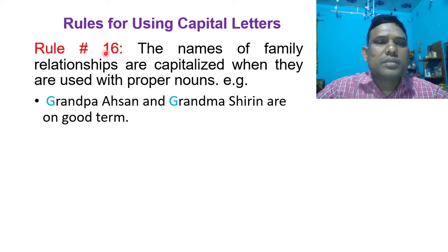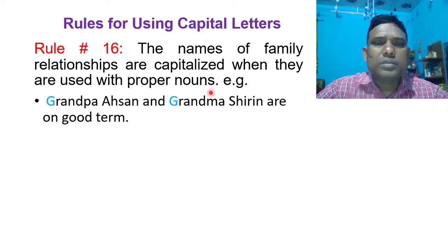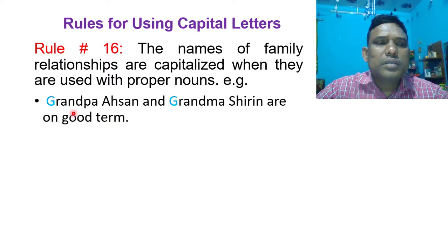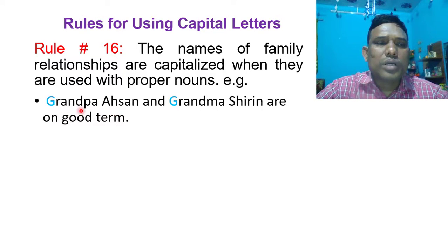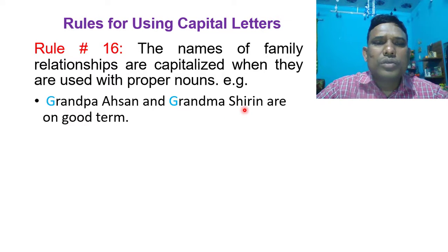Rule number 16: The names of family relationships are capitalized when they are used with proper nouns. For example, Grandpa Ahasan and Grandma Shirin are in Good Town. Here, Grandpa and Grandma are names of family relationships. Grandpa is used with the proper noun Ahasan, so the first letter G in Grandpa is capitalized. Grandma is used with the proper noun Shirin, so the first letter G in Grandma is capitalized.